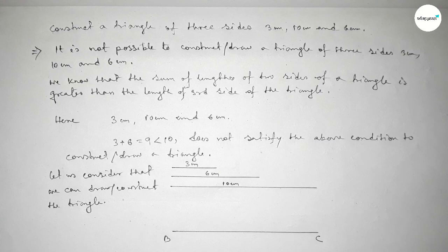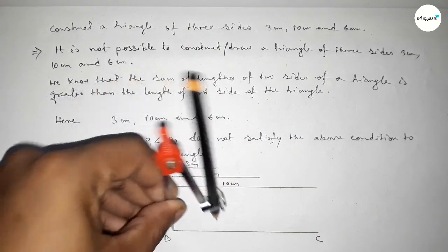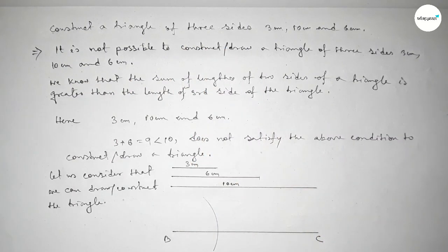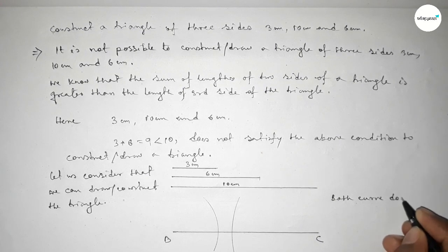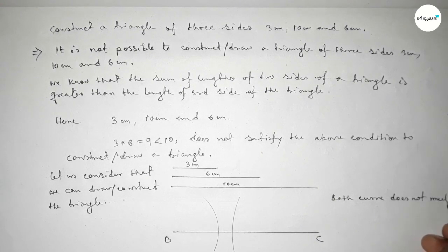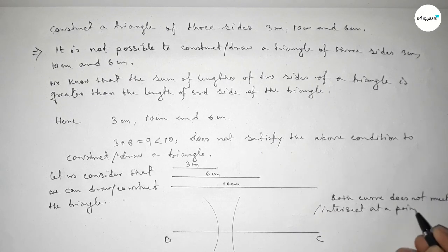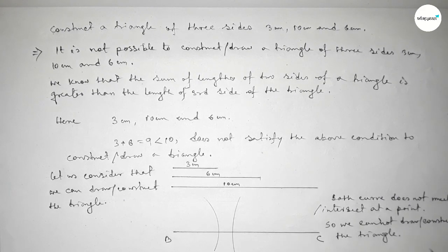Taking the length of 3 centimeters using a compass, placing it at one end and drawing an arc. Then taking the length of 6 centimeters using the compass, placing it at the other end and drawing a curve. We can see that both curves do not meet or intersect at a point, so we cannot construct or draw a triangle with sides 3 cm, 10 cm, and 6 cm.